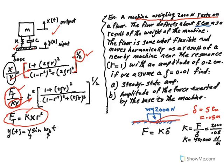The floor is somewhat flexible and moves harmonically — meaning like a sine or cosine wave — as a result of a nearby machine. The base vibration frequency omega_b is very close to the natural frequency of this system, which consists of the machine with stiffness k and a very small damping ratio of 0.01. A damping ratio of 0.01 is very small — essentially like a spring with almost no damping.